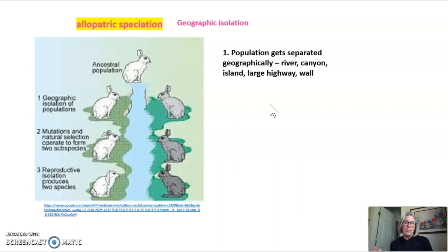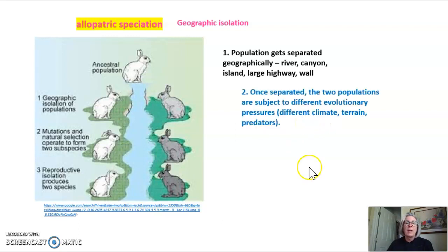If it's a really small organism, it could be a large highway. A large highway could separate frogs or salamanders or snakes. Even a wall can separate members of a population if they're small. Once they're separated, the two populations on either side of whatever is separating them geographically are subject to different evolutionary pressures.